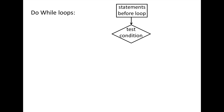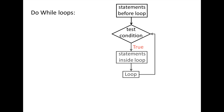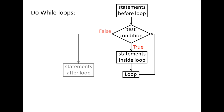A DO WHILE loop can be represented in a flowchart. We enter a DO WHILE loop if the test condition is true. As long as the test condition is true, the loop will be executed over and over. The loop will be terminated when the test condition is false.